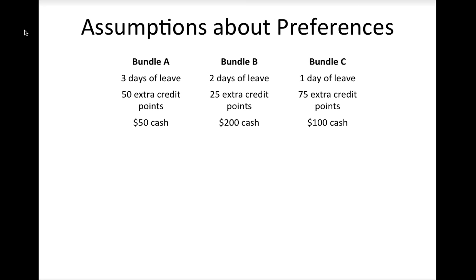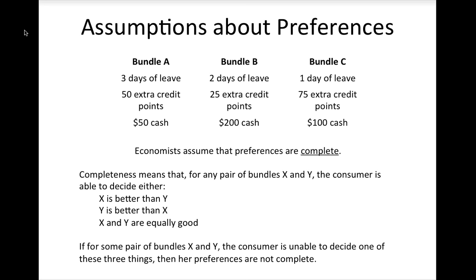The first thing economists assume about consumer preferences is that consumers are able to make a choice. Formally, this means that economists assume that preferences are complete. For any pair of bundles, the consumer is able to tell us either X is better than Y, Y is better than X, or X and Y are equally good. If for some pair of bundles the consumer cannot decide one of these three things, then her preferences are not complete.